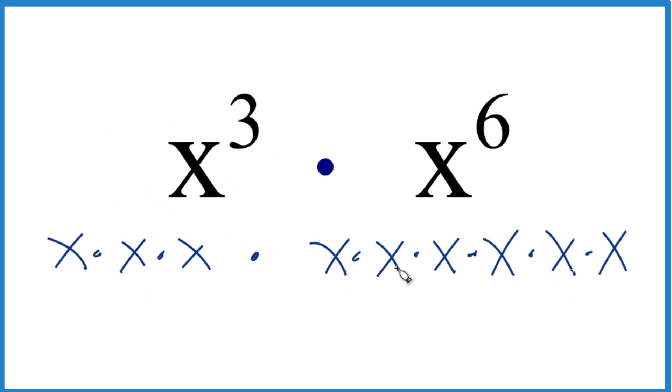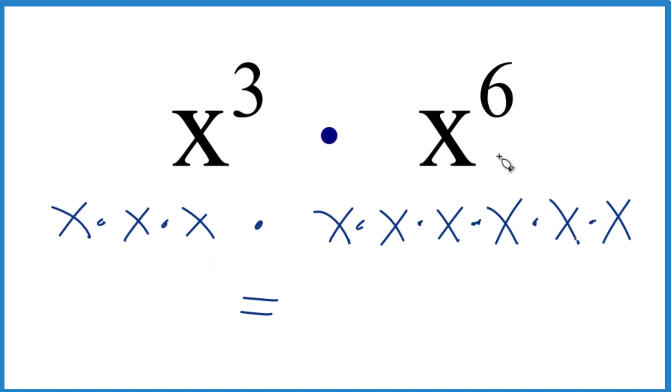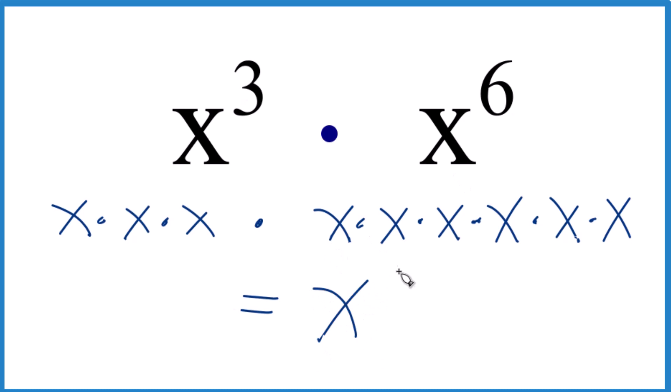We're just going to add all the x's up. One, two, three, four, five, six, seven, eight, nine. So x to the third times x to the sixth, you get x to the ninth.